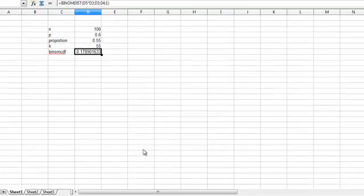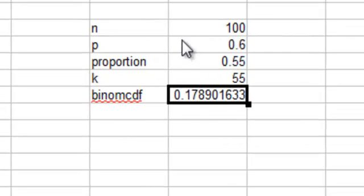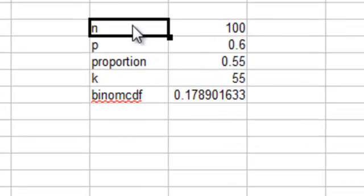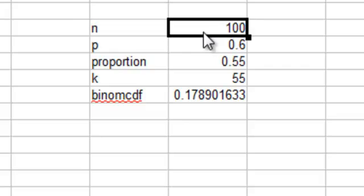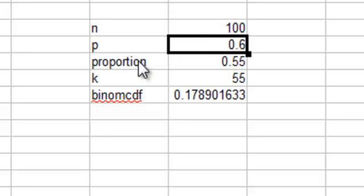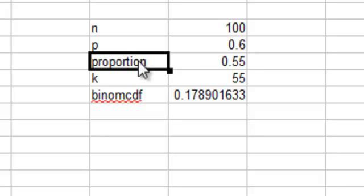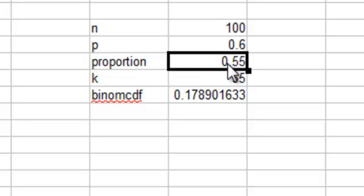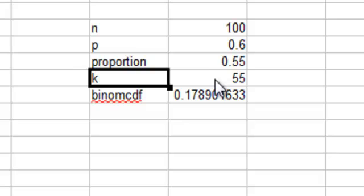Okay so here we are, we have it set up with N trials and N is 100, probability of success is 0.6 and we want to have a low probability that the sample proportion will be 0.55 or less.